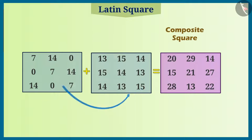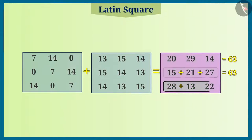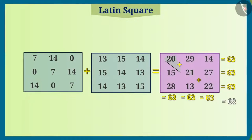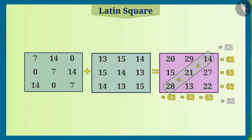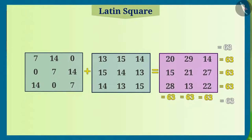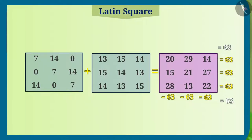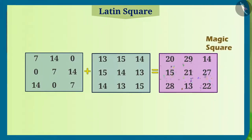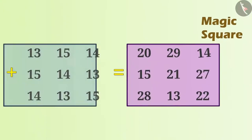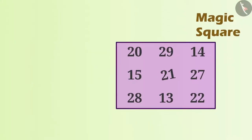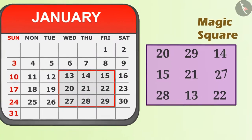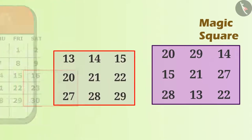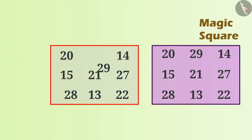In this composite square, the sum of all rows, columns and diagonals is equal. Hence, this is a magic square, and you can see the numbers in the square given by you are rearranged to a magic square.